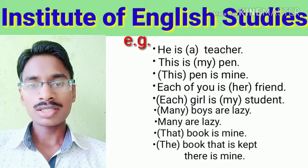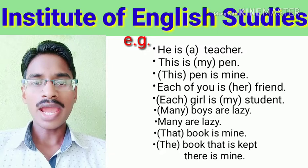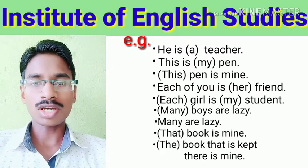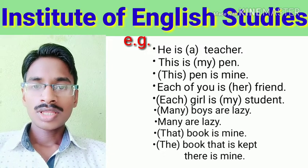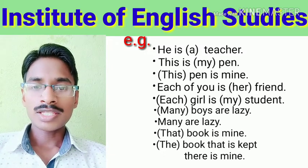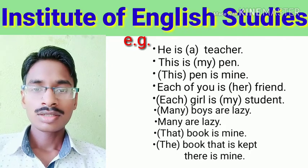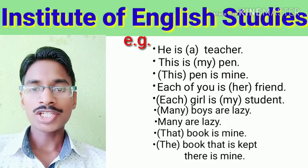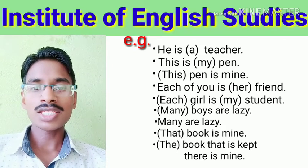In the sentence 'He is a teacher', 'a' is the determiner and 'teacher' is the noun. In 'This is my pen', 'my' is the determiner and 'pen' is the noun.